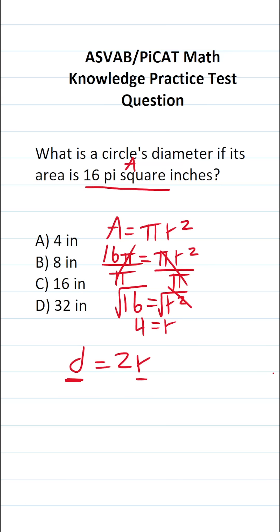So now that we know that r is 4, we can go ahead and plug in 4 here. This becomes d equals 2 times 4. Diameter equals 2 times 4, which is 8. So the diameter of this circle is b, 8 inches.